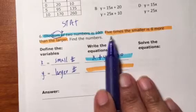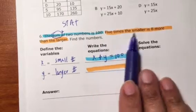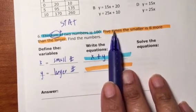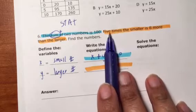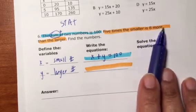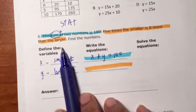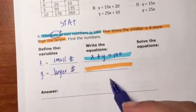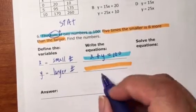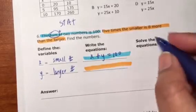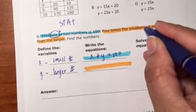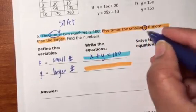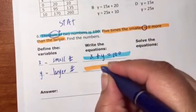Now let's look at the orange sentence. Five times the smaller number is eight more than the larger number. Here we would say, remember that the word 'is' means equals in this case.